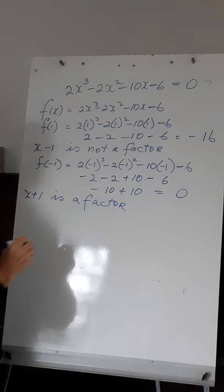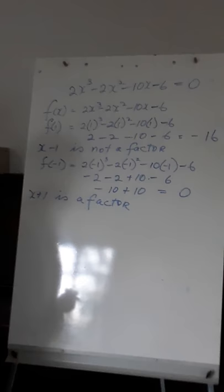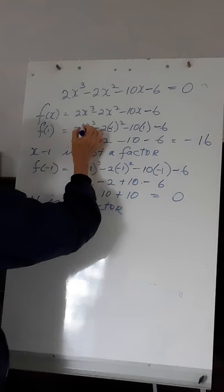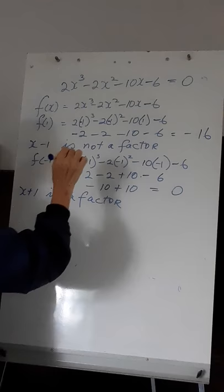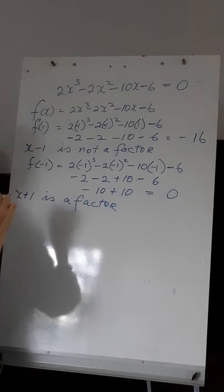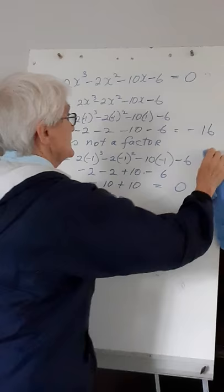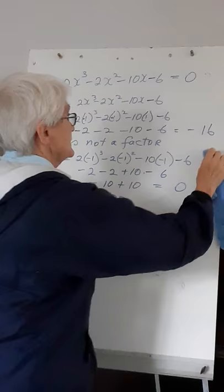Substituting f of 1 we get a remainder of minus 16, so x minus 1 is not a factor. Substituting f of minus 1 gives minus 2 minus 2 minus 2 plus 10, and the remainder is actually 0. Sorry about that correction.